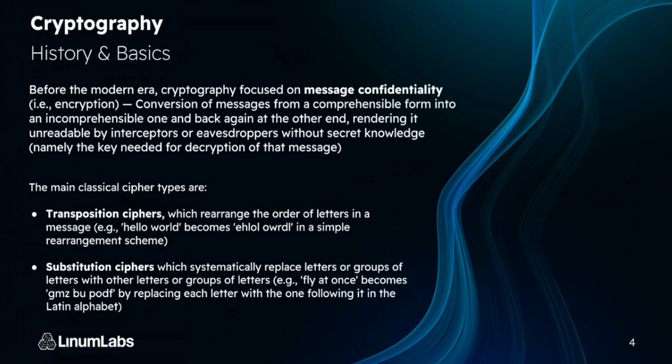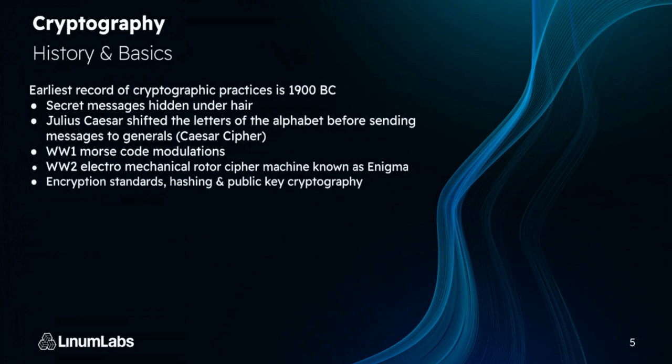You also get substitution ciphers, which systematically replace letters or groups of letters with other letters and groups of letters — so instead of A, every time there's an A, I'll say the letter Z. That's a bit of an obvious one, and you can do this in any alphabet. Cryptography has been around since 1900 BC, and it's developed to a point where we now have encryption standards, hashing, public key cryptography, and of course zero knowledge proofs.